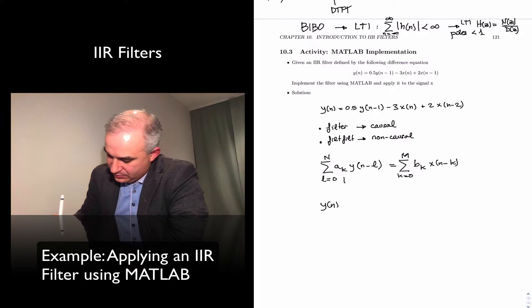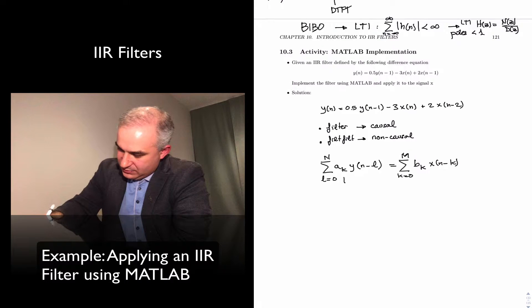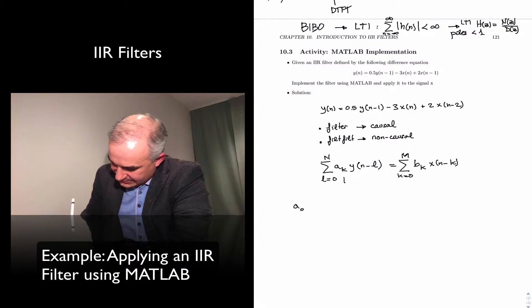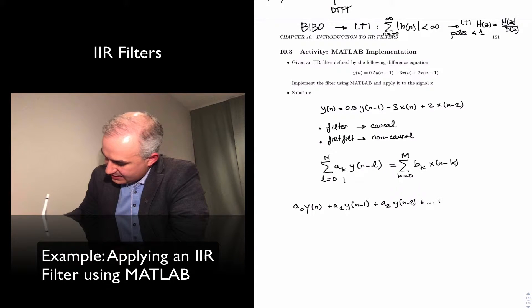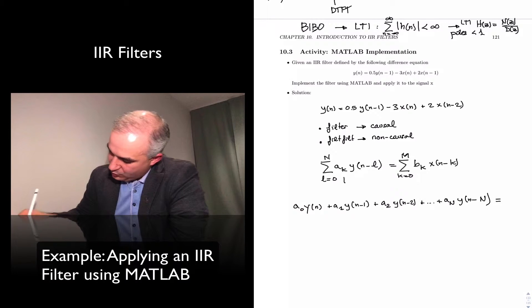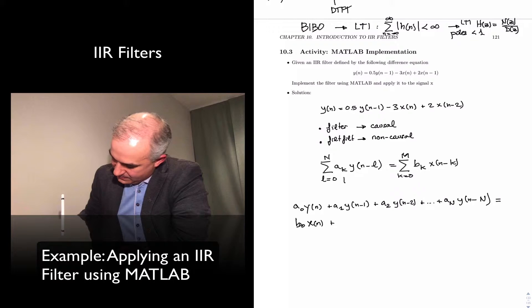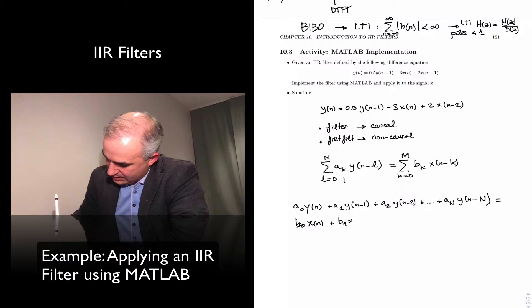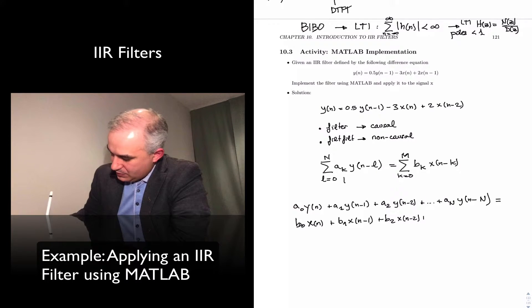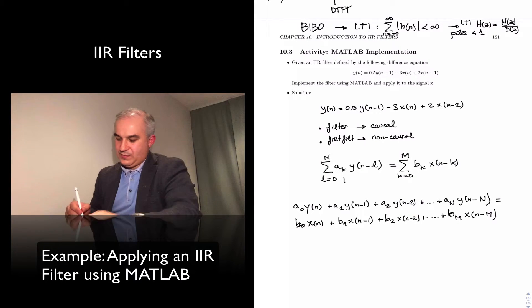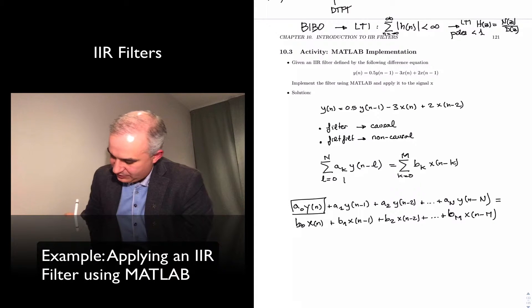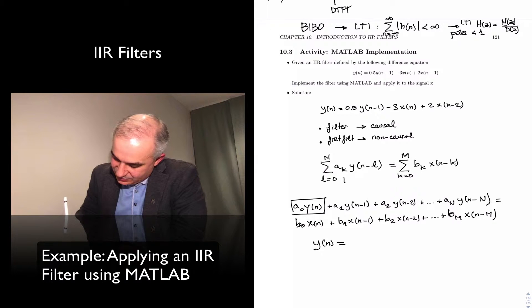Because we want y[n], the a0 here — if we were to expand this a little bit to see how this works — we have: a0 y[n] plus a1 y[n-1] plus a2 y[n-2] plus dot dot dot up to a_n y[n-n] equals b0 x[n] plus b1 x[n-1] plus b2 x[n-2] plus dot dot dot b_m x[n-m]. Since typically you solve for y[n], a0 is equal to 1.